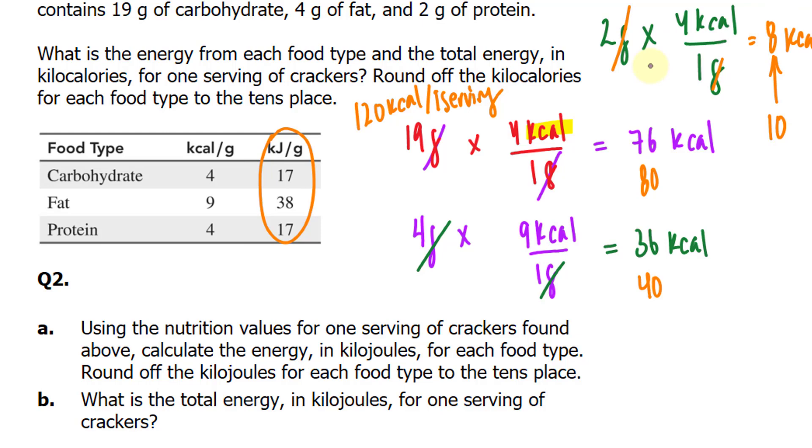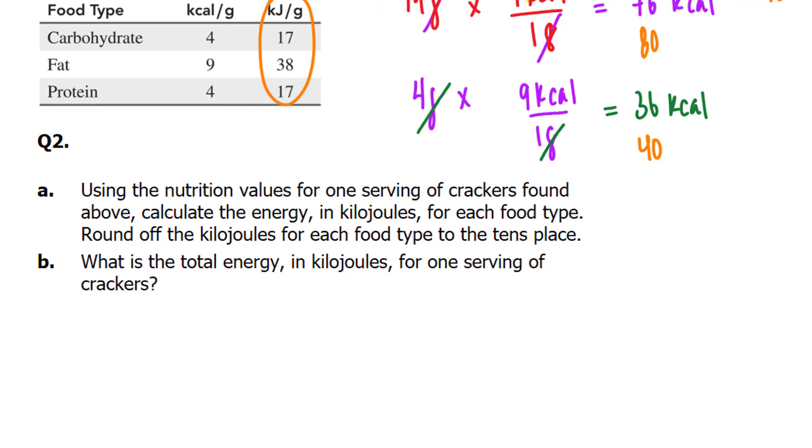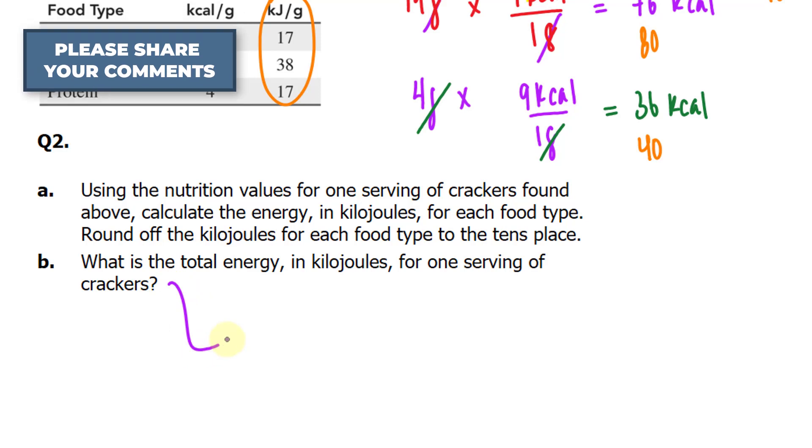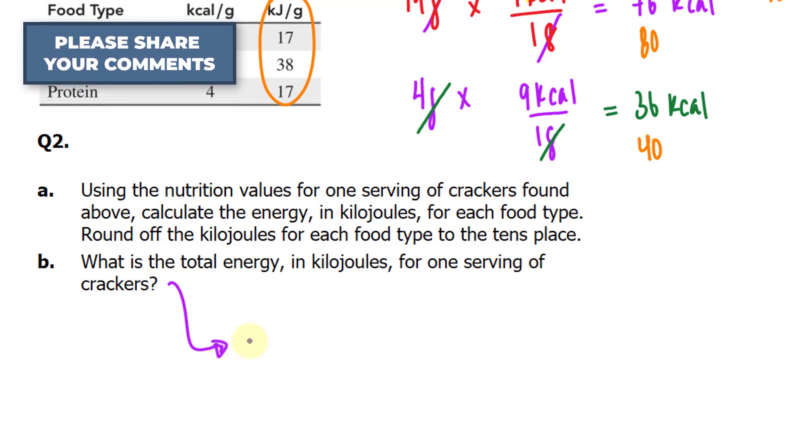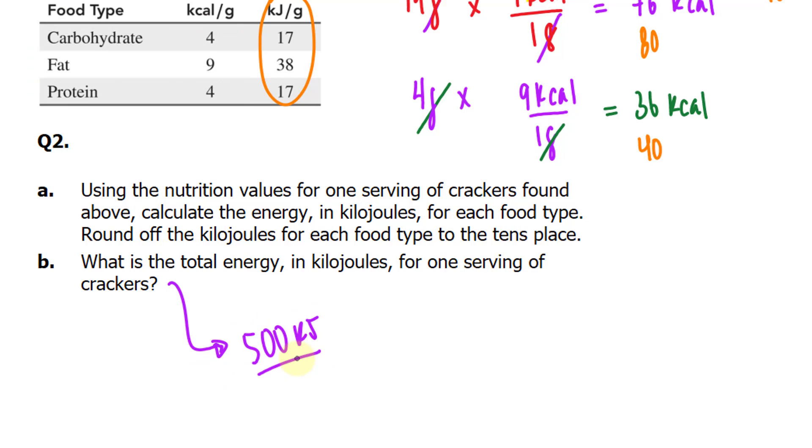And the rounding process would be the same. The second part says, what is the total energy in kilojoules for one serving of crackers? I'll just give you the answer here. You should end up with 500 kilojoules. If you have any questions as to how I got this number, just leave us a comment below, and I'll gladly show you the solution for question 2.